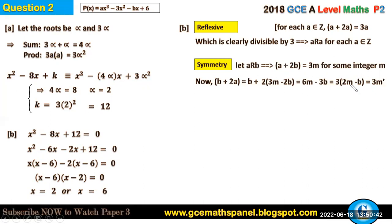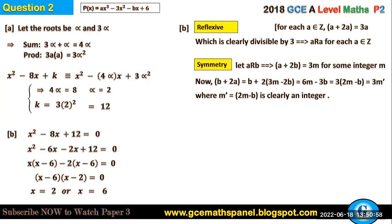Since m is an integer and b is an integer, m' = 2m - b is clearly an integer. Therefore, b relates a whenever a relates b, so the relation is symmetric. Many students find this step difficult, so take careful note of the substitution technique used here.